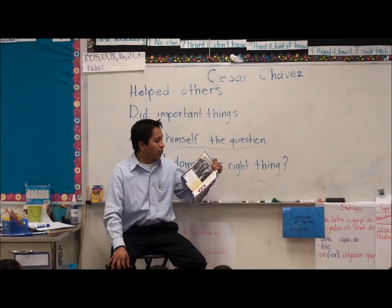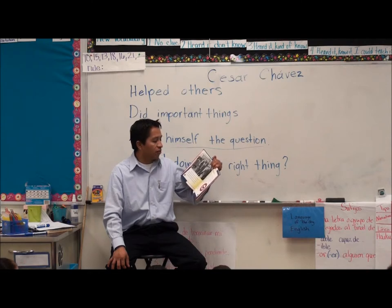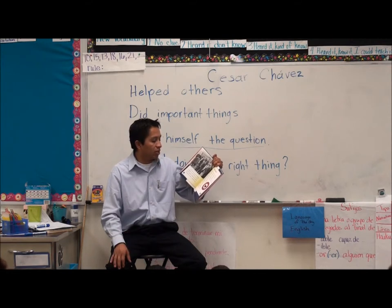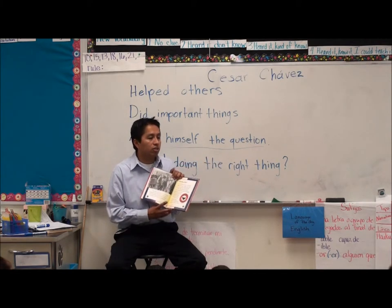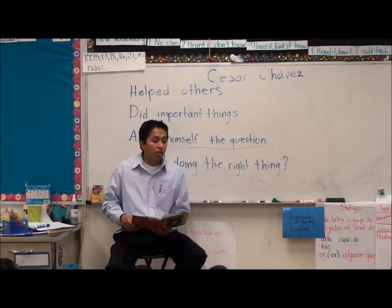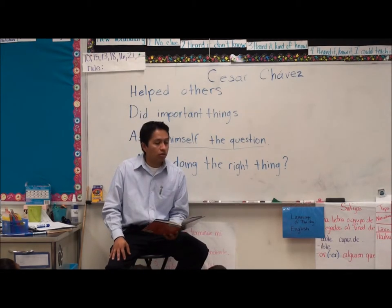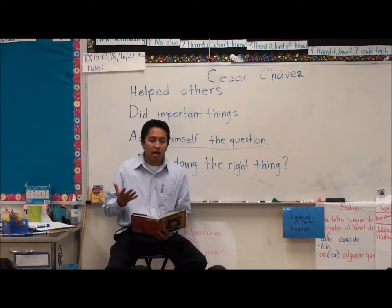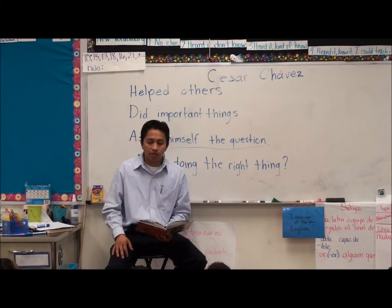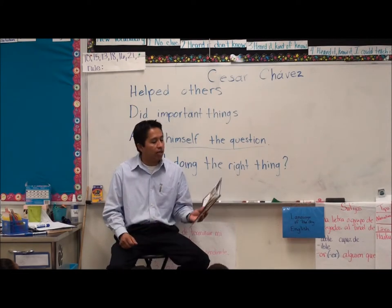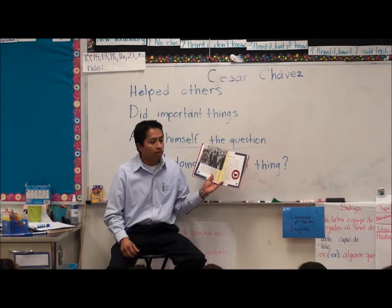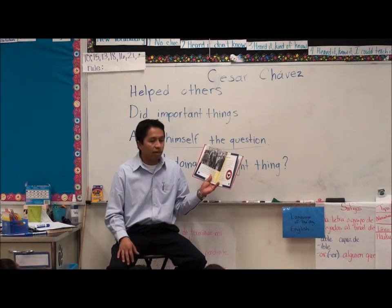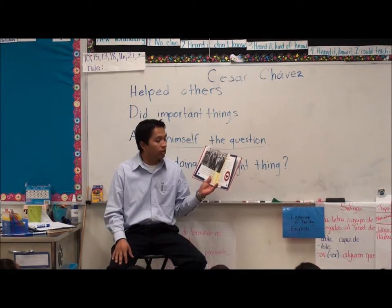Cesar helped Mexican Americans become United States citizens. He also helped them sign up to vote. Cesar was ready to help make life better for migrant farm workers. He was teaching them how to vote, and all those things are good for people because that helps them have freedom and better lives. Right from the start, when Cesar started working for Fred, he started doing good things for people.